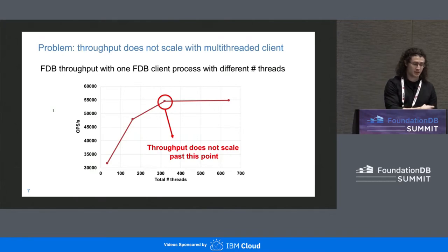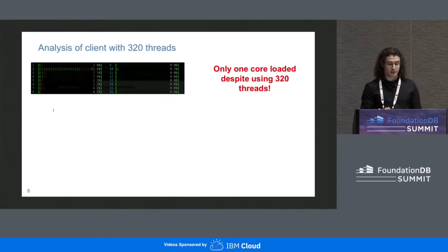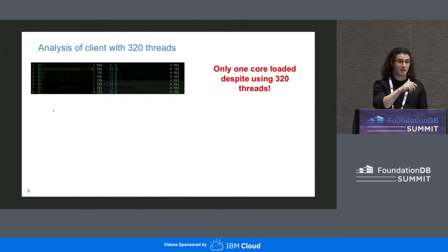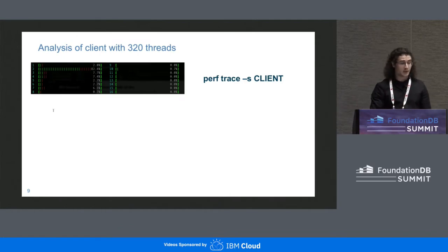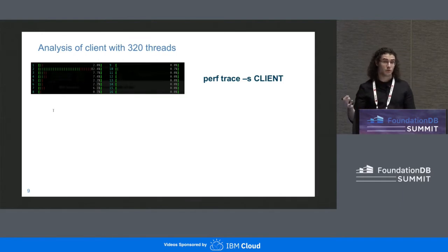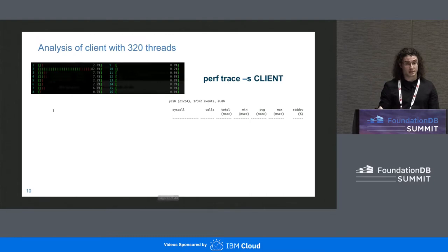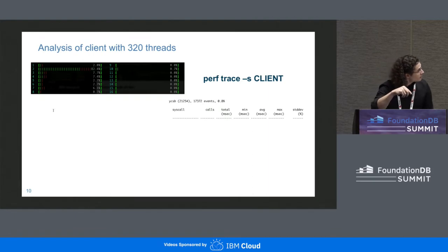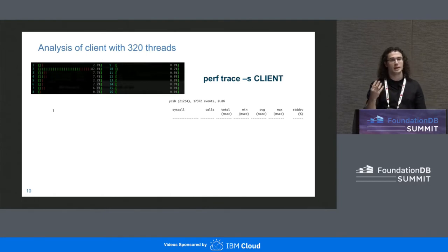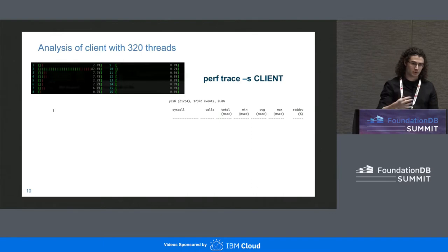To investigate, we looked at both the server and the client. On the client, despite having 320 threads active, only one core is basically active at a time — the others are mostly idle. So we ran perf, specifically the 'perf trace -s' command on the client binary. This gives us a trace of the system calls made by the binary on a per-thread basis, including the load of each thread and statistics like aggregated CPU time and average CPU time per system call invocation.